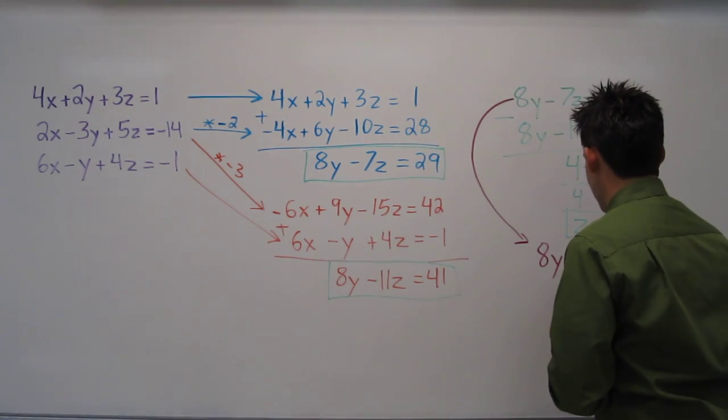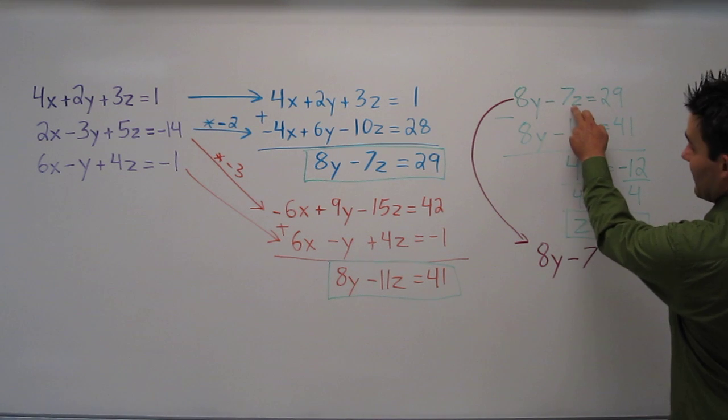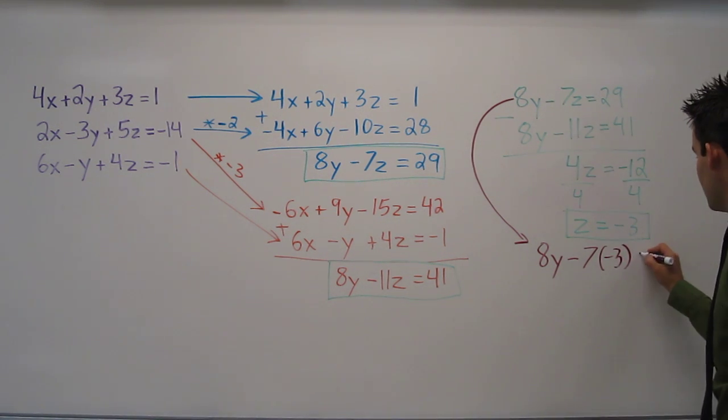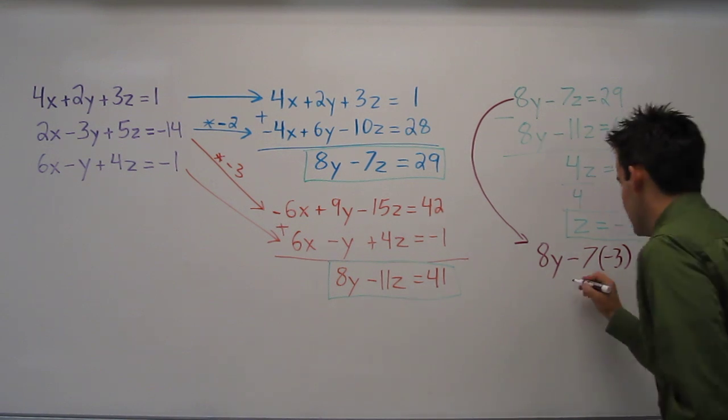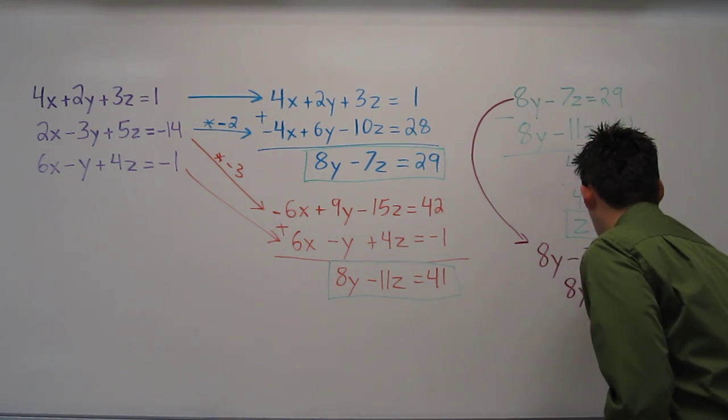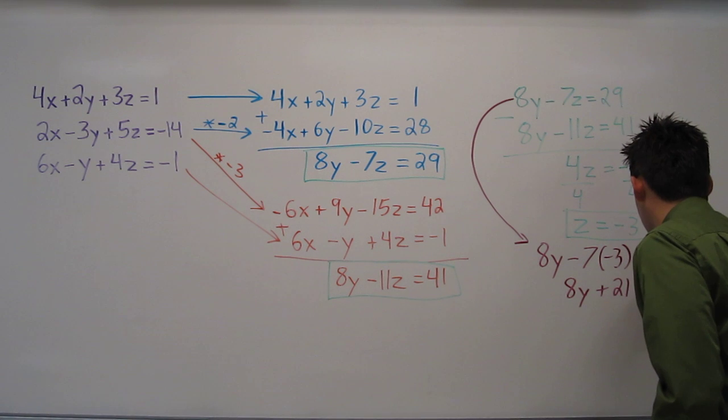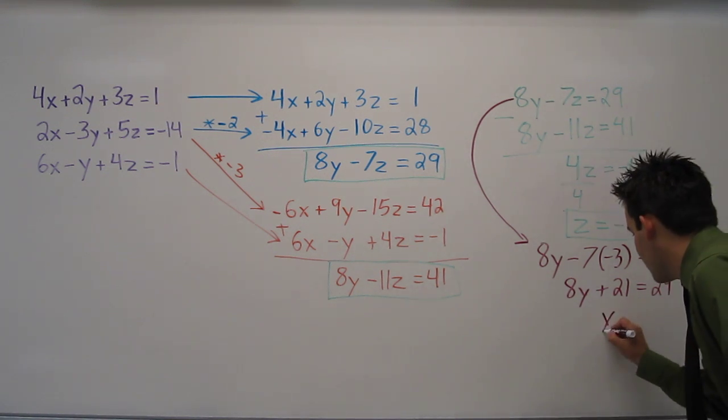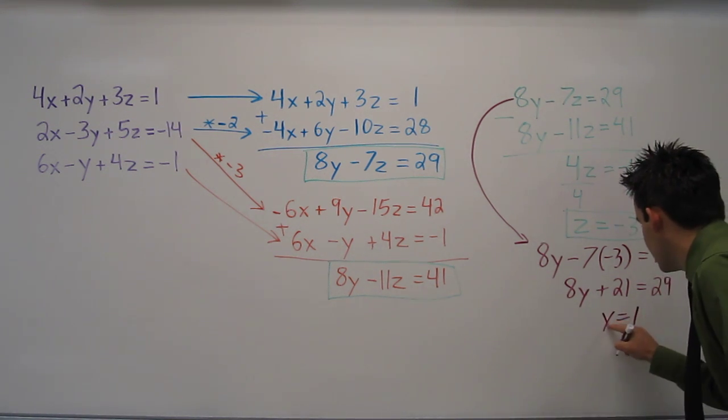8y minus 7 and instead of writing z, I'm going to write negative 3 equals 29. So I have 8y plus 21 equals 29. Subtracting 21 from both sides and dividing by 8, I can see that y equals 1.